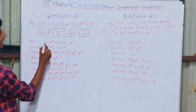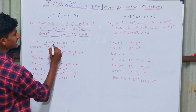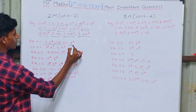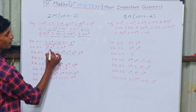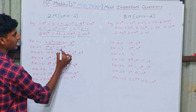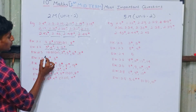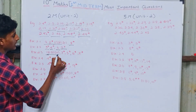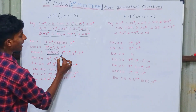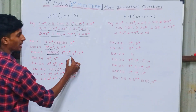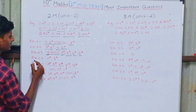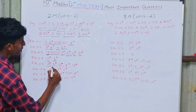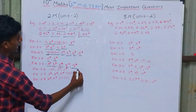Exercise 2.1: 2nd sum, 6th sum — both subdivisions — 2nd sum, 4th subdivision, 8th sum (very important). Exercise 2.2: 3rd sum, 4th sum (very important), 6th sum important, 9th sum (very important). Exercise 2.3: 1st sum, 2nd sum, 6th sum, 8th sum and 9th sum — all very important.